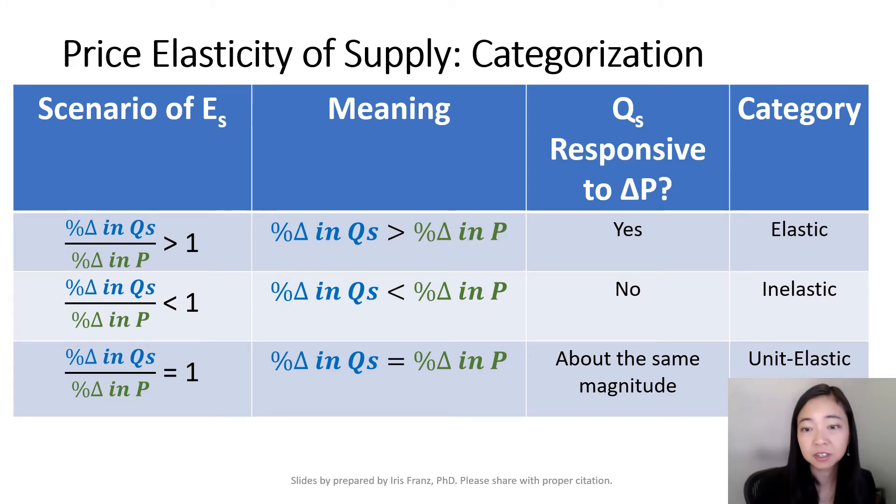If your price elasticity of supply is greater than one, that means the percentage change in quantity supplied is greater than the percentage change in price, so the supply is elastic.